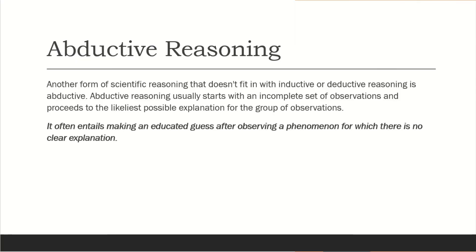Abductive reasoning is another form of scientific reasoning that does not fit into inductive or deductive reasoning. Abductive reasoning usually starts with an incomplete set of observations and proceeds to find the likeliest possible explanation for the group of observations. It often entails making an educated guess after observing a phenomenon for which there is no clear explanation.